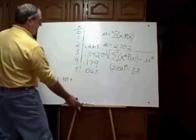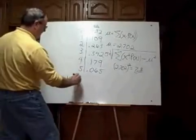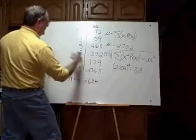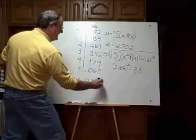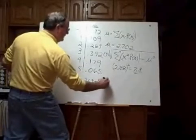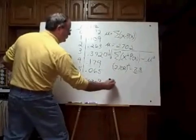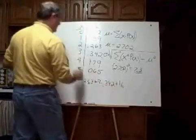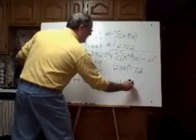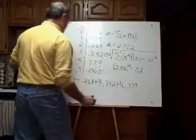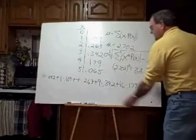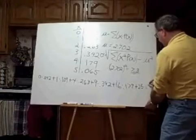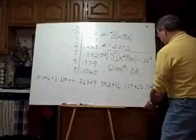2 squared is 4. So that's 4 times 0.263 plus, 3 squared is 9 times its probability of 0.342 plus, 4 squared is 16 times 0.179, let me come over here, plus 5 squared is 25 times this probability of 0.065.